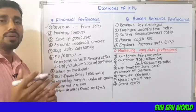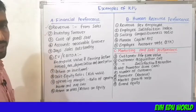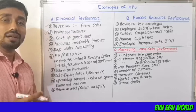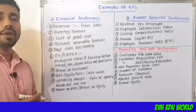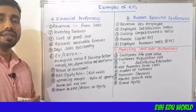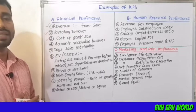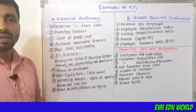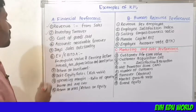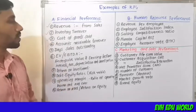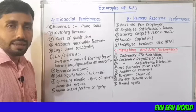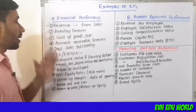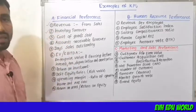The third is cost of goods sold — it is the cost required for producing a product in the form of material, labor, and all direct expenses. The fourth one is accounts receivable turnover — when selling on credit, we look at the ratio of accounts receivable turnover.